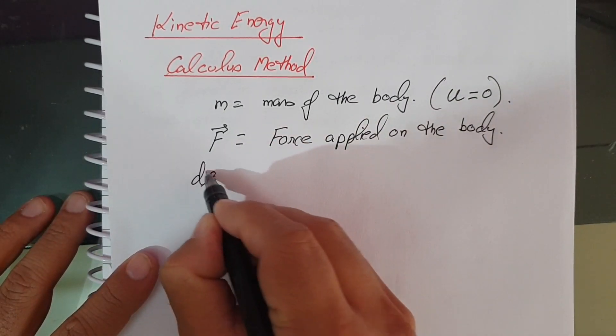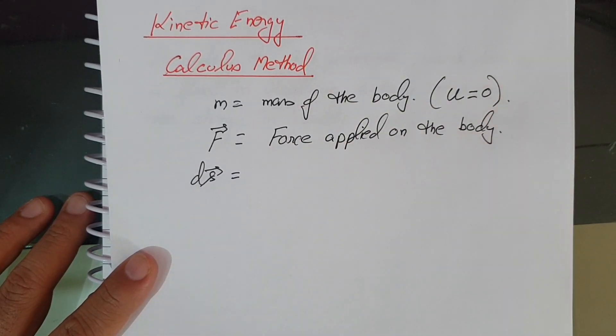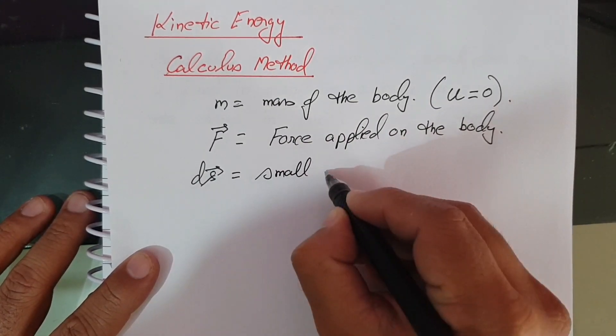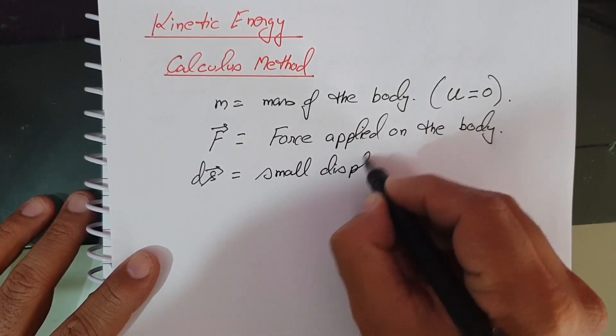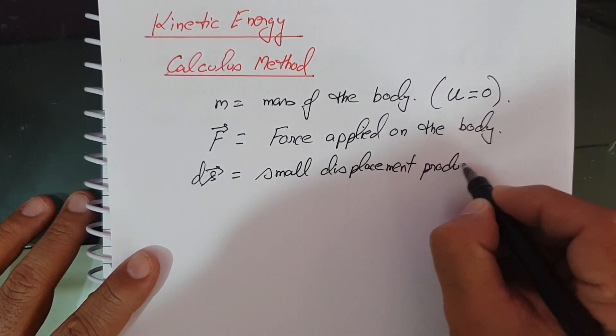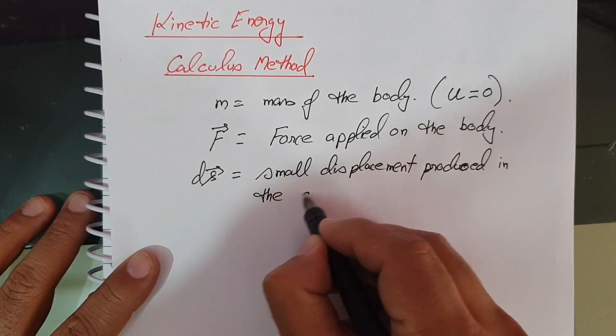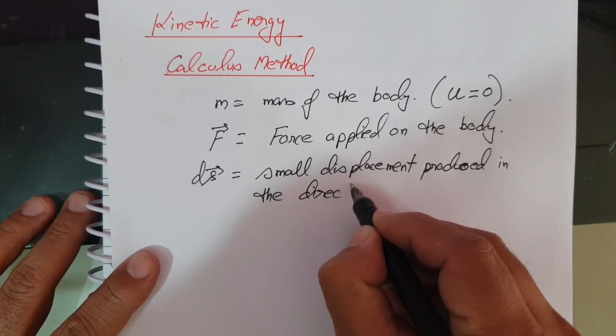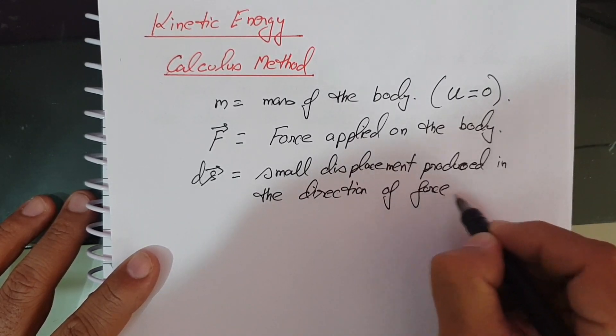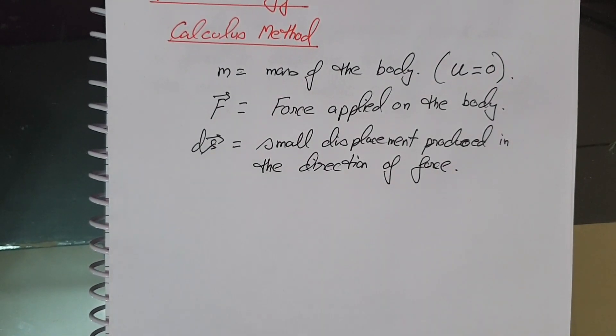Now take dS. This is the small displacement produced in the body in the direction of force applied. dS is the small displacement produced in the direction of force.